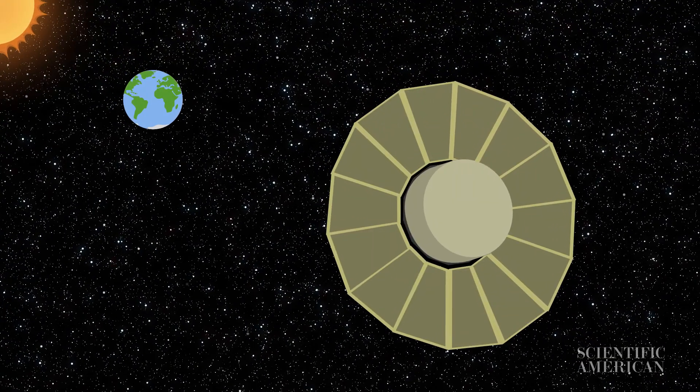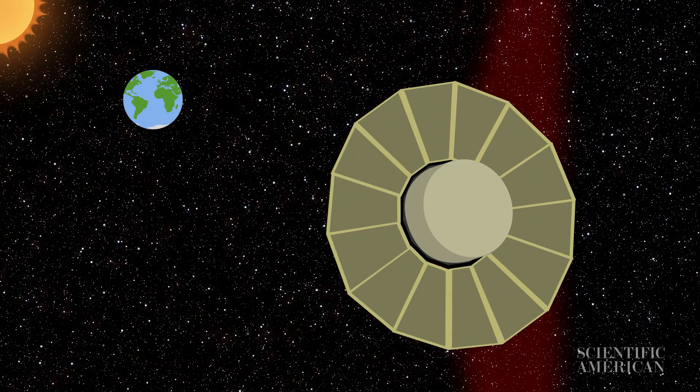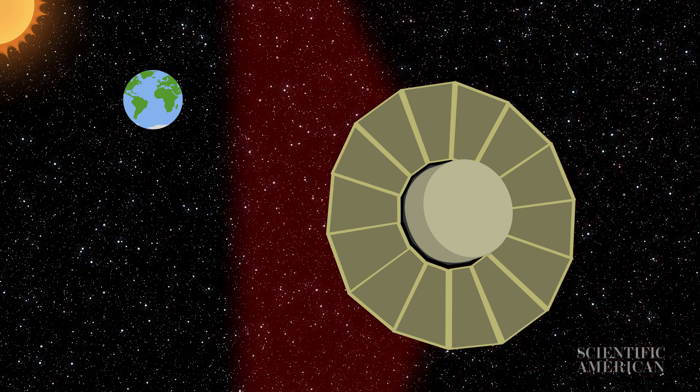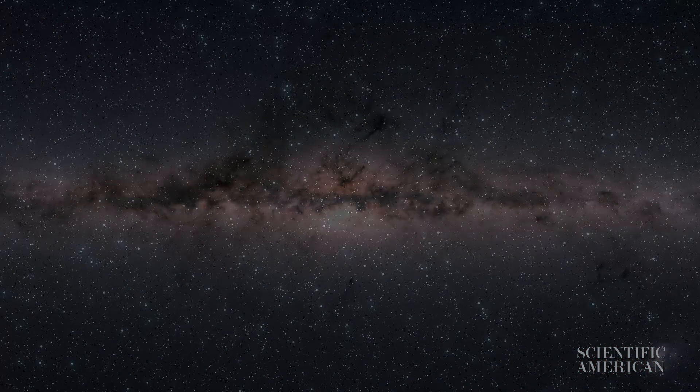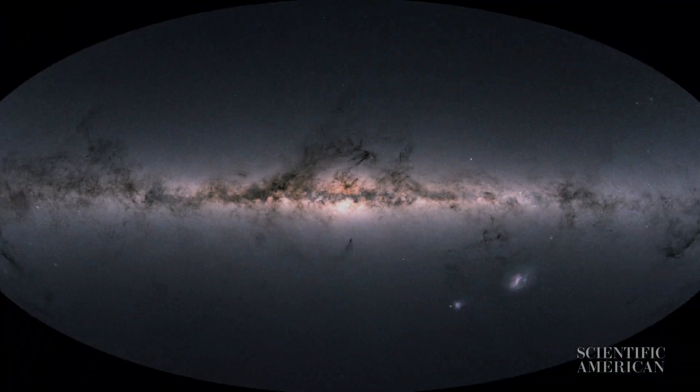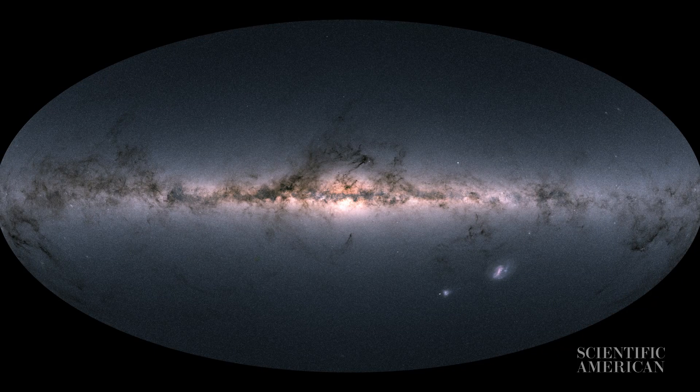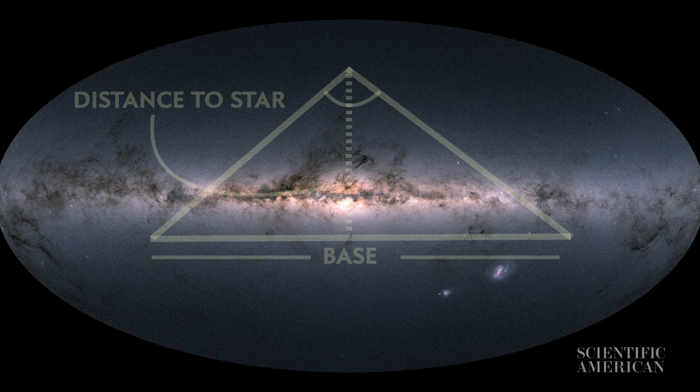Above the turbulence of Earth's atmosphere, Gaia has been plotting the distances to over a billion stars, creating a map of the Milky Way and some of its galactic neighbors. All that from the lowly triangle.